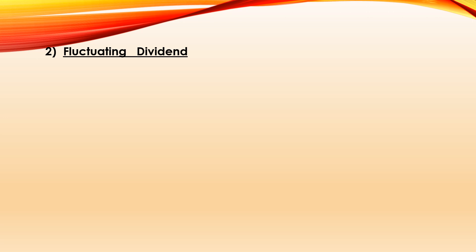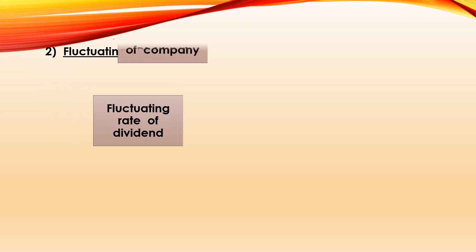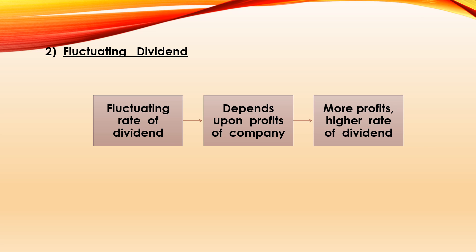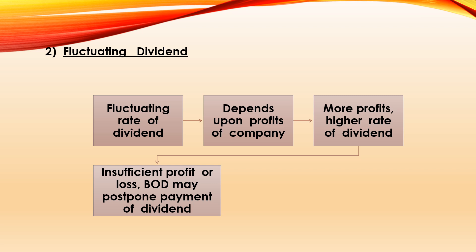The second feature of equity shares is fluctuating dividend. The word fluctuating means one which keeps on changing. The dividend given to equity shareholders is fluctuating, meaning it changes depending upon the profits of the company. Higher the profits, higher will be the rate of dividend. If profits are not sufficient or the company incurs losses, the board of directors may postpone payment of dividend. So the dividend given to equity shareholders is uncertain and irregular.